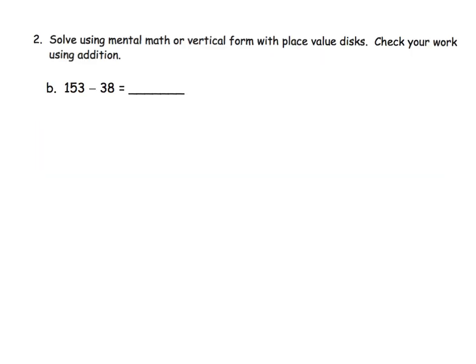This says to solve using mental math or the vertical form with the place value disks, and then check using addition. I'm going to show you what it would look like with the vertical form using those place value disks. Remember, these are not disks that you have to go to Walmart and buy — these are dots that you're going to draw on paper.